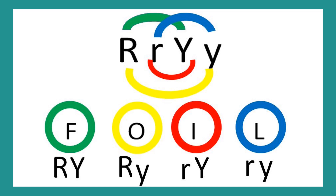Let's see how it was applied in our previous example. First (shown in green): uppercase R and Y, or round and yellow. Outer (shown in yellow): uppercase R and lowercase y, or round and green. Inner (shown in red): lowercase r and uppercase Y, or wrinkled and yellow. Last (shown in blue): lowercase r and y, or wrinkled and green. Using the FOIL method, we can easily determine the possible gametes that we will cross.